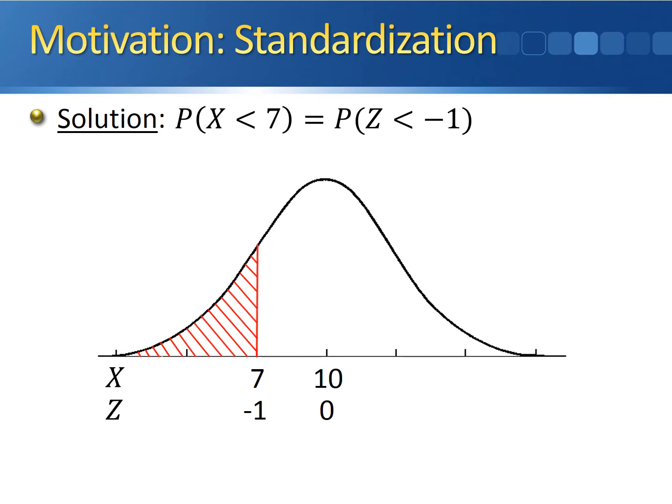Turning seven into a standard normal variable gave us the probability that z is less than negative one. By looking up negative one inside the standard normal distribution table, we found that area was 0.1587. So the probability that an invoice gets paid in less than seven days is 0.1587.